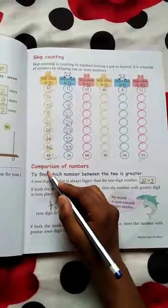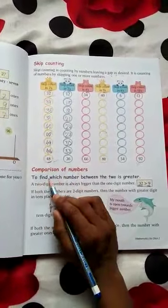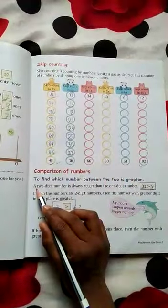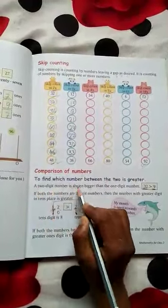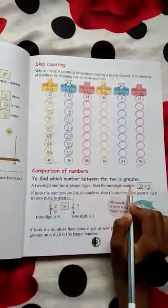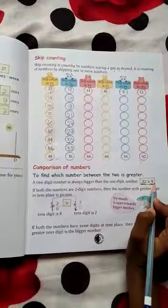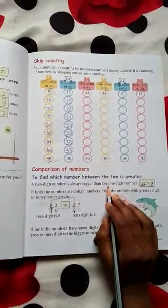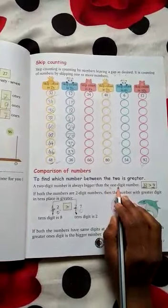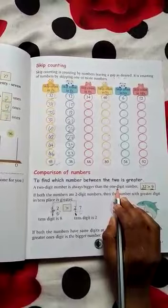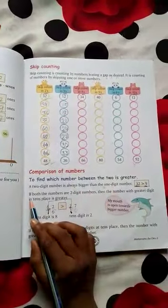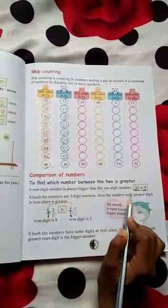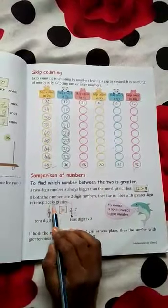Now we have to look at the comparison of numbers. To find which number between the two is greater, a two-digit number is always bigger than a one-digit number. 32 is greater than 9. If both the numbers are two-digit numbers, then the number with greater digit in tenth place is greater.